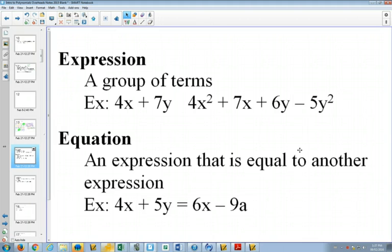An expression is any group of terms. So any polynomial, any monomial, any binomial, those are all expressions. There should be a comma in between here and here as two different examples. Those are both expressions.